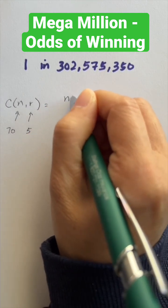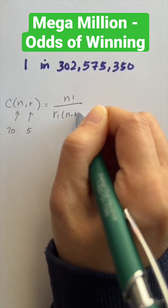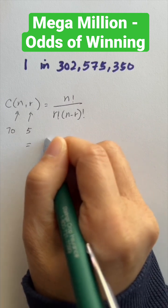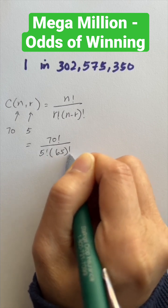This formula is equal to n factorial divided by r factorial, n minus r factorial. Plugging these numbers in, we get 70 factorial, 5 factorial, and 65 factorial.